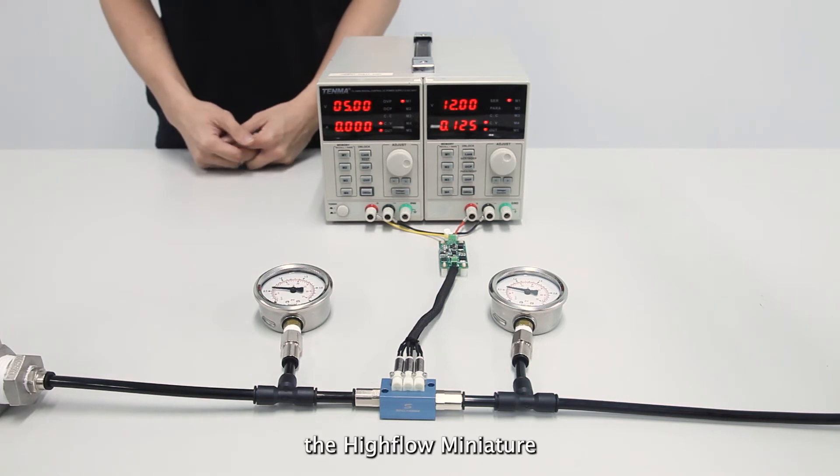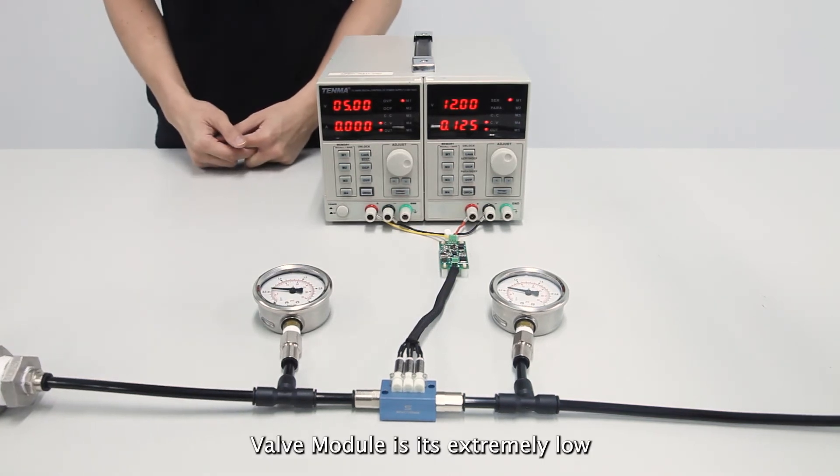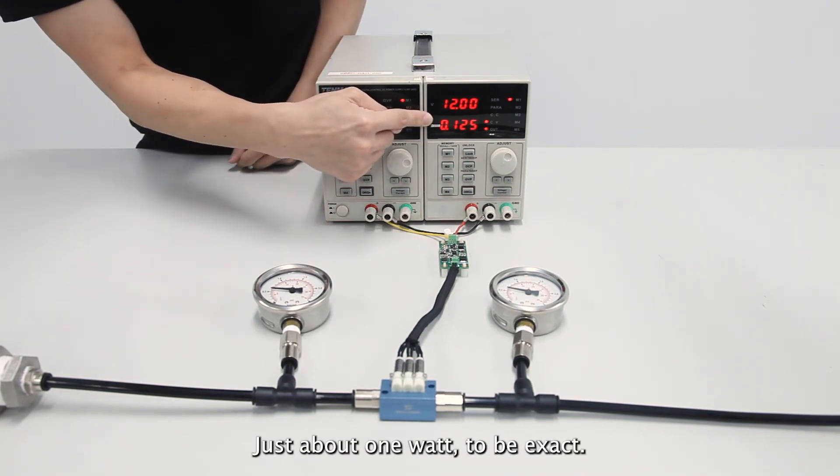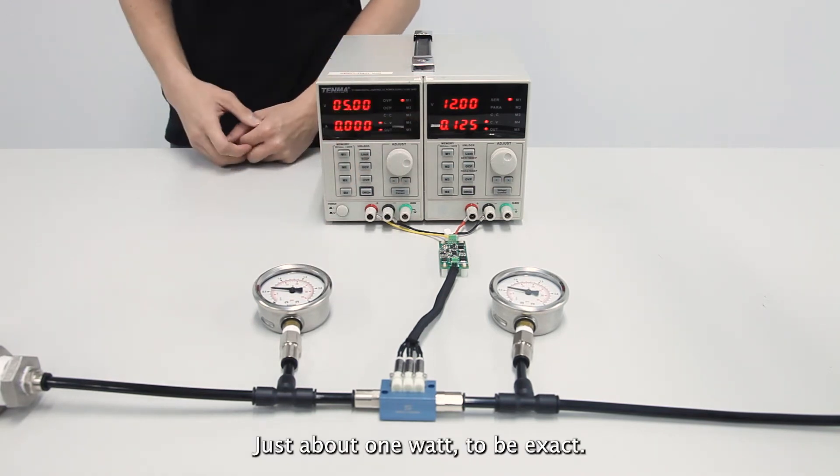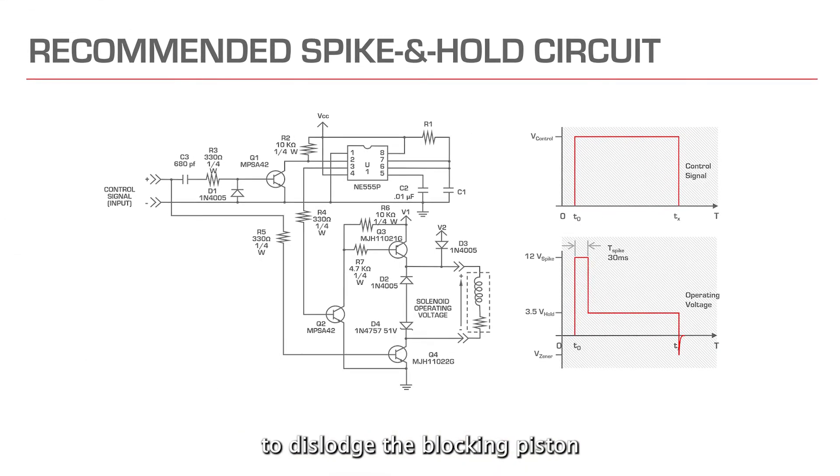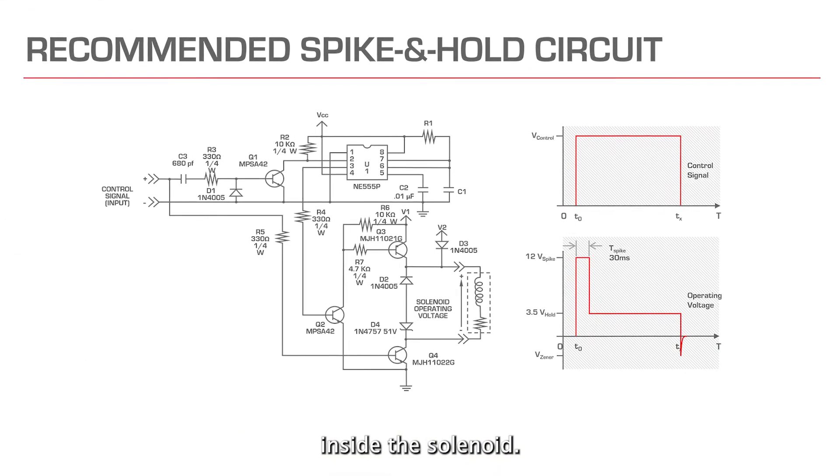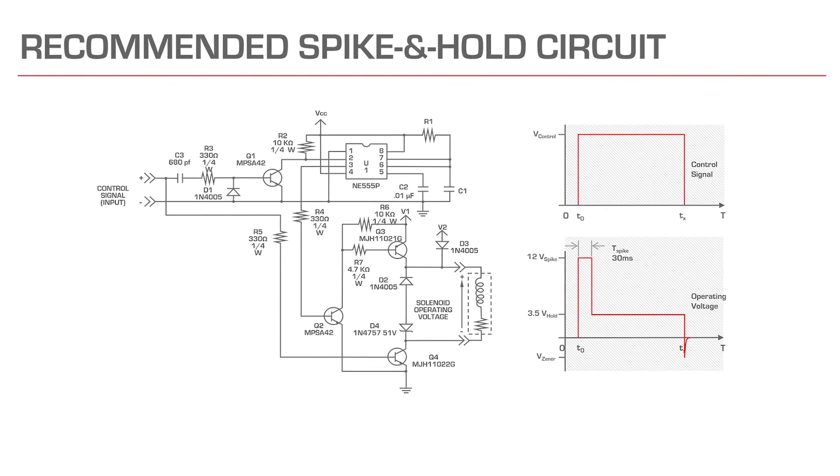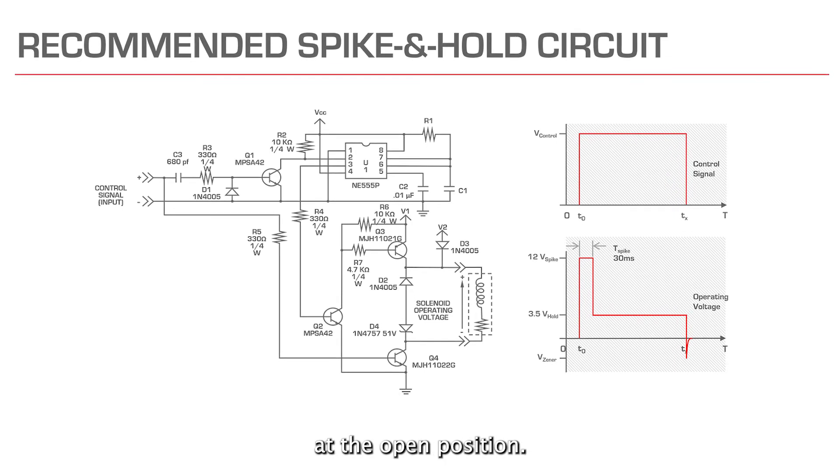Another key feature of the high flow miniature valve module is its extremely low power consumption, just about 1 watt to be exact. This is achieved by providing a momentary 12V spike voltage to dislodge the blocking piston inside the solenoid valves. Then, a much lower voltage of 3.5V is needed to hold the pistons at the open position.